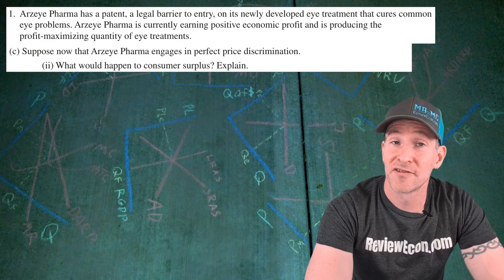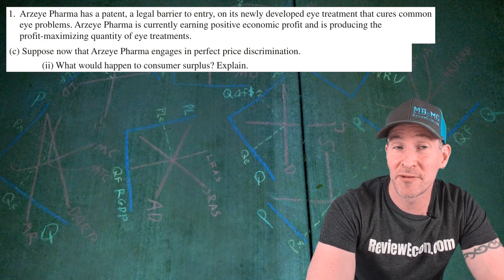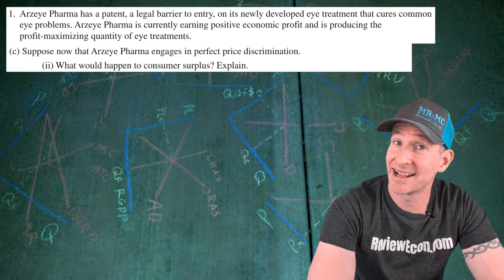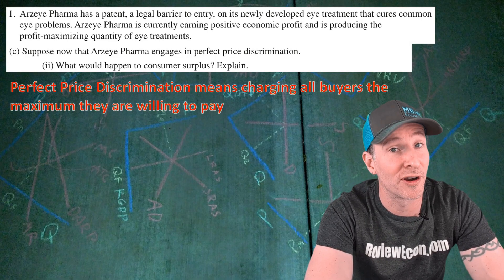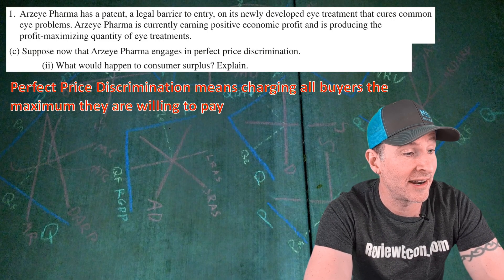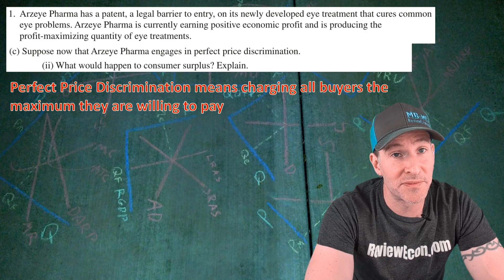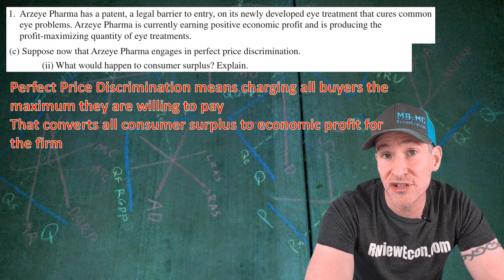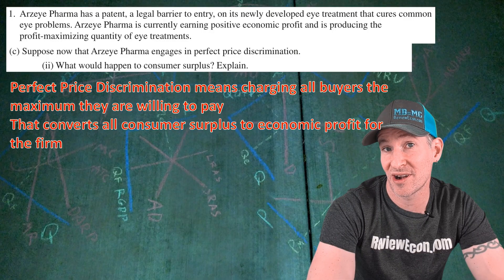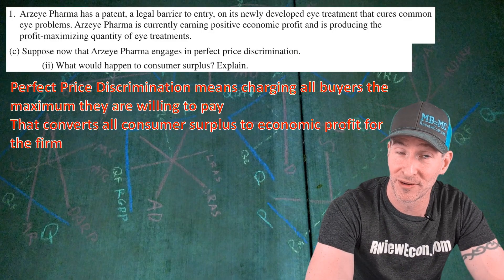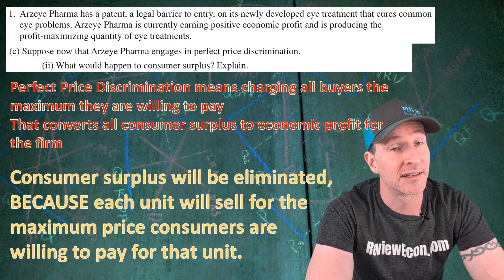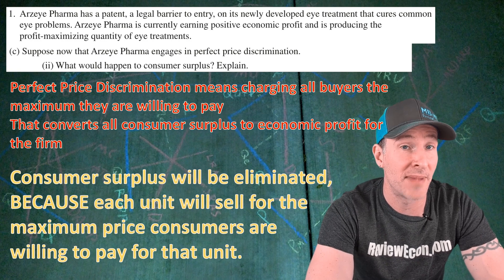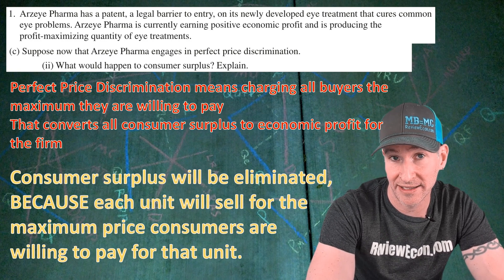For part C-II, we have to say what happened to consumer surplus as a result and explain. A perfect price discriminator charges all buyers the maximum price they are willing to pay, converting all consumer surplus to economic profits for the firm. Therefore, consumer surplus will be eliminated because each unit sells for the maximum price that consumers are willing to pay.